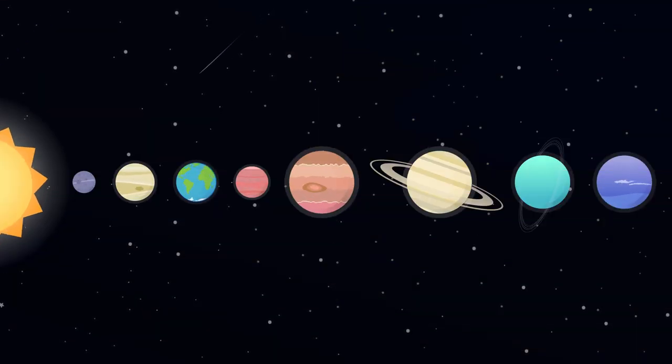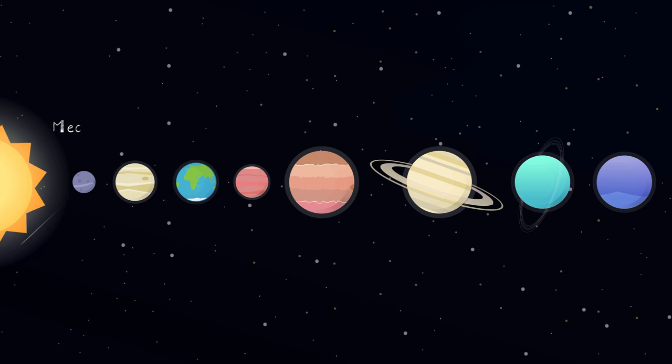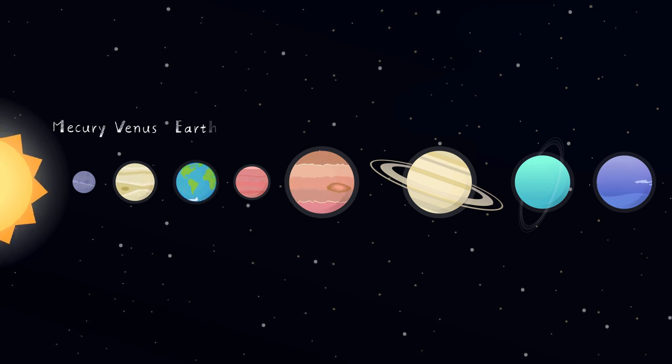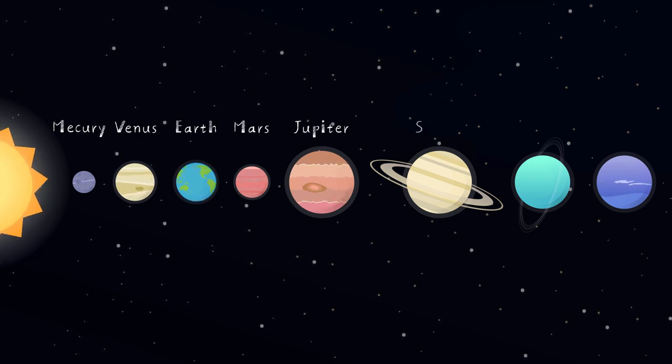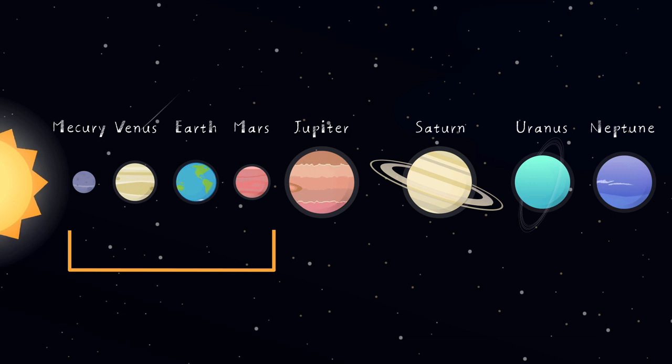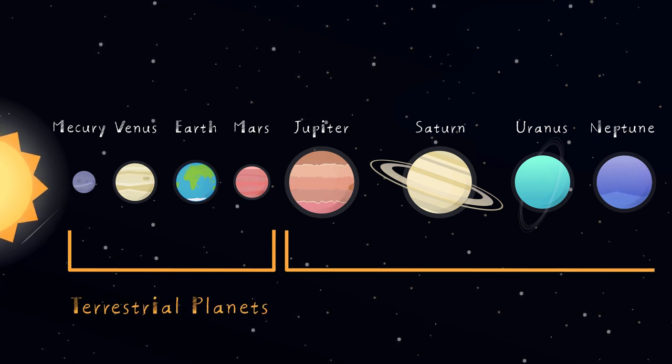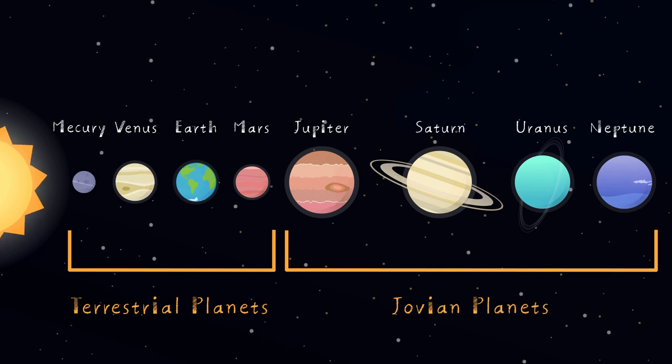Our solar system is home to eight planets. From nearest to farthest from the Sun, these planets are Mercury, Venus, Earth, Mars, Jupiter, Saturn, Uranus, and Neptune. The planets from Mercury to Mars are the terrestrial planets, while the planets from Jupiter to Neptune are the Jovian planets.